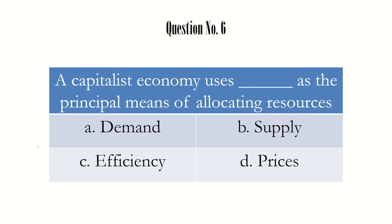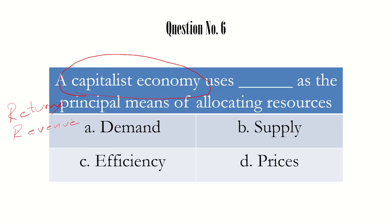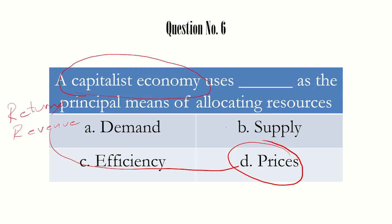Question number 6: a capitalistic economy uses dash as the principal means of allocating resources. In a capitalistic economy, private players can own resources and run businesses. When they set up businesses, they keep in mind one important thing — the returns, meaning the revenue they can earn. Revenue is directly dependent on price. So in a capitalist economy, before allocating any resources, the capitalist thinks about the price he can get by producing a particular good or service. The answer for the sixth question is price.